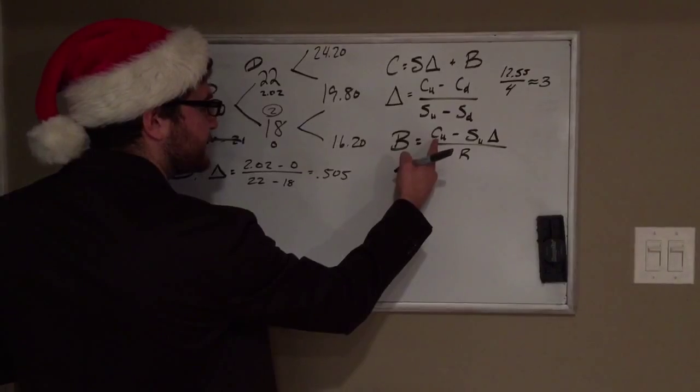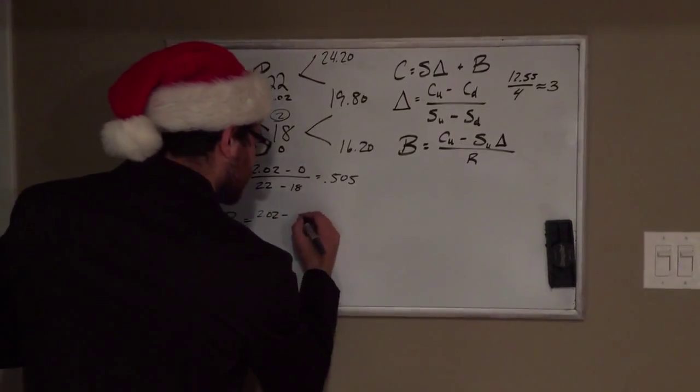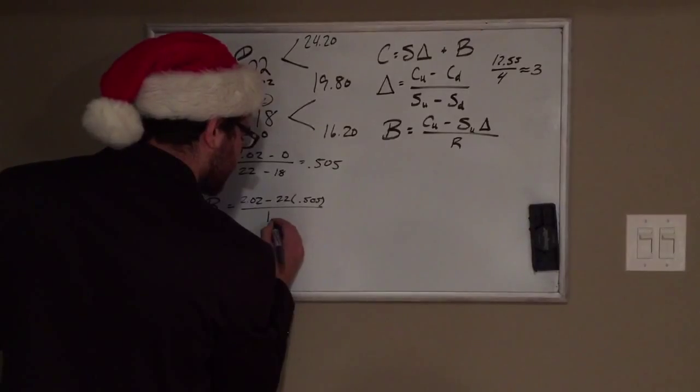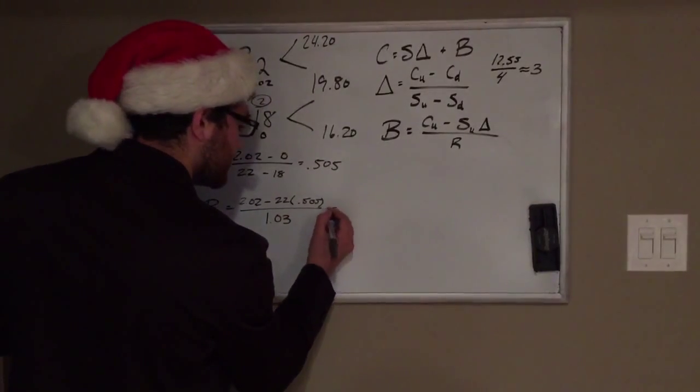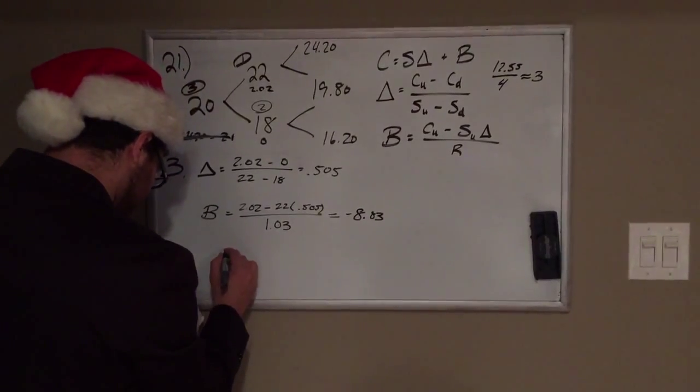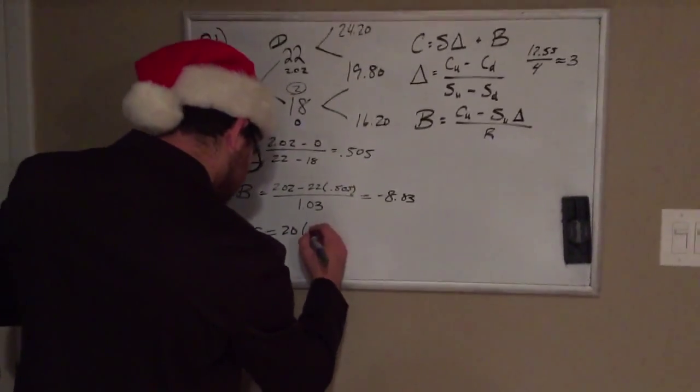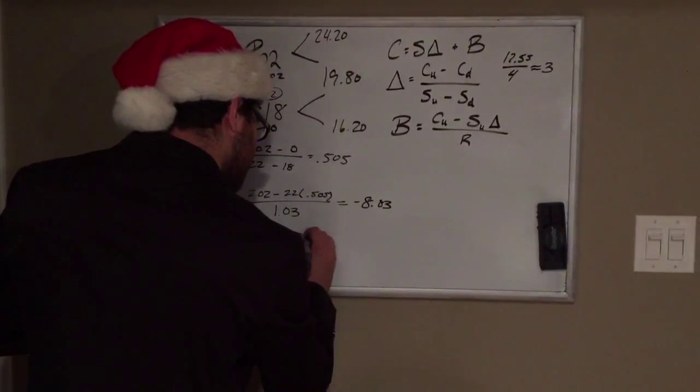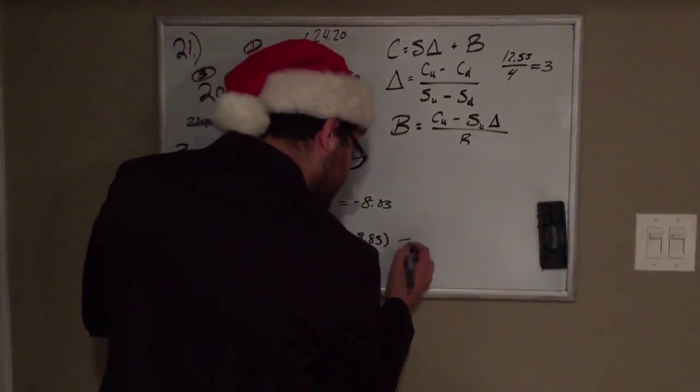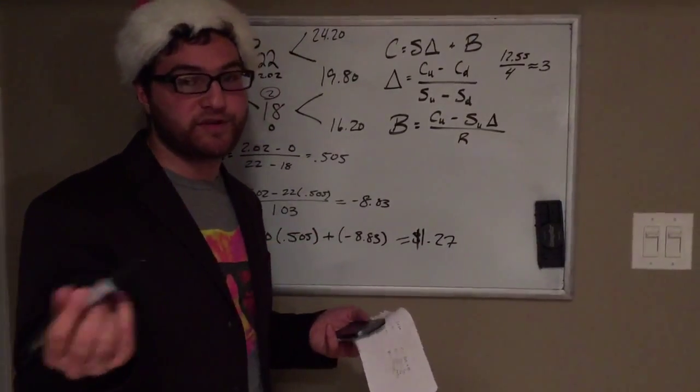Now solve for B. What's the price that goes up? It's 2.02 minus the stock price, which is 22, multiplied by the hedge ratio, all over the 1 plus our rate, which is about 3%. That equals negative 8.83. So now we plug this into our first formula above. C equals the price, which is $20, times the delta or hedge ratio, plus negative 8.83. This gives us $1.27. So that is going to be the price of this call option for maturity of six months.